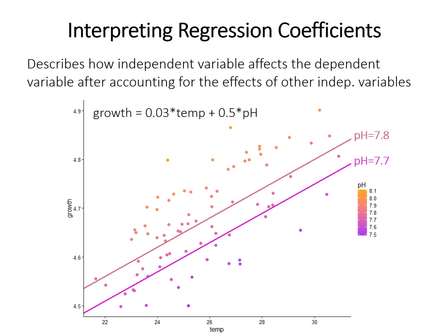The coefficients in multiple regression describe how one independent variable affects the dependent variable after accounting for the effects of all the other independent variables. Interpreting these coefficients can be a little tricky. Here's a made-up example where shell growth rate is influenced by both water temperature and water pH. The regression equation is: growth = 0.03 times temperature plus 0.5 times pH. The coefficient of 0.5 for pH means that at any given temperature, one unit of pH increase will increase the growth rate by 0.5 units, or a 0.1 unit pH increase will increase growth rate by 0.05 units.